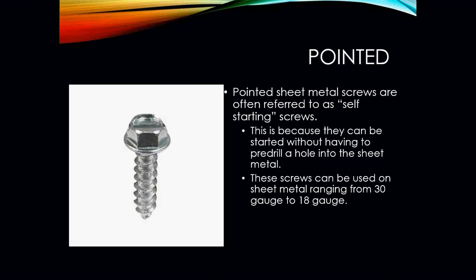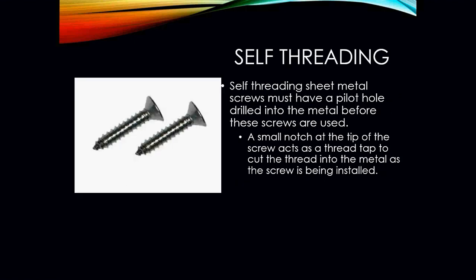Pointed sheet metal screws are often referred to as self-starting screws because they can be started without having to pre-drill a hole into the sheet metal. These screws can be used on sheet metal ranging from 30 gauge all the way to about 18 gauge metal. Self-threading sheet metal screws must have a pilot hole drilled into the metal before the screw is started — otherwise it will walk on you and dull out the tip. A small notch at the tip acts as a thread tap to cut threads into the metal as the screw is installed.